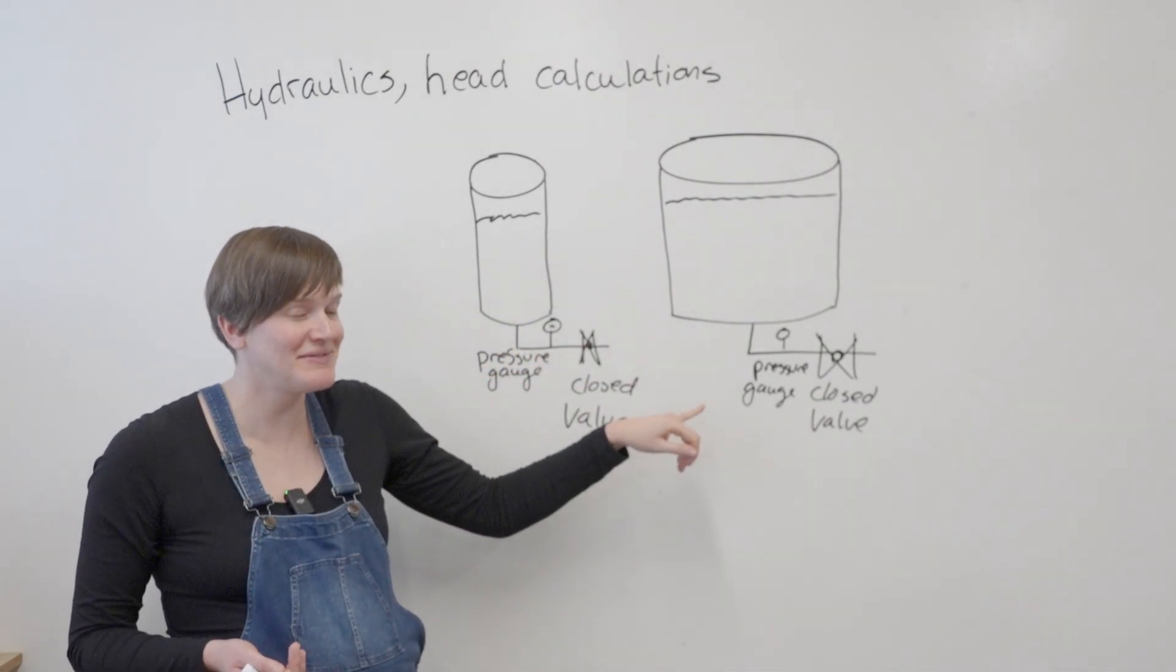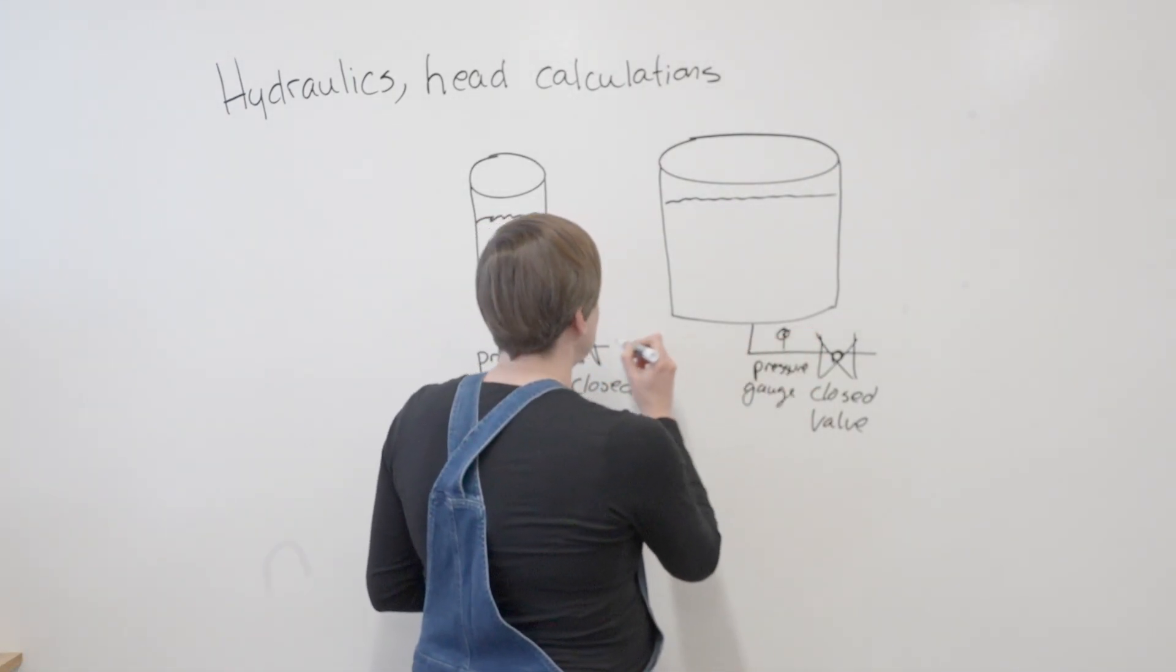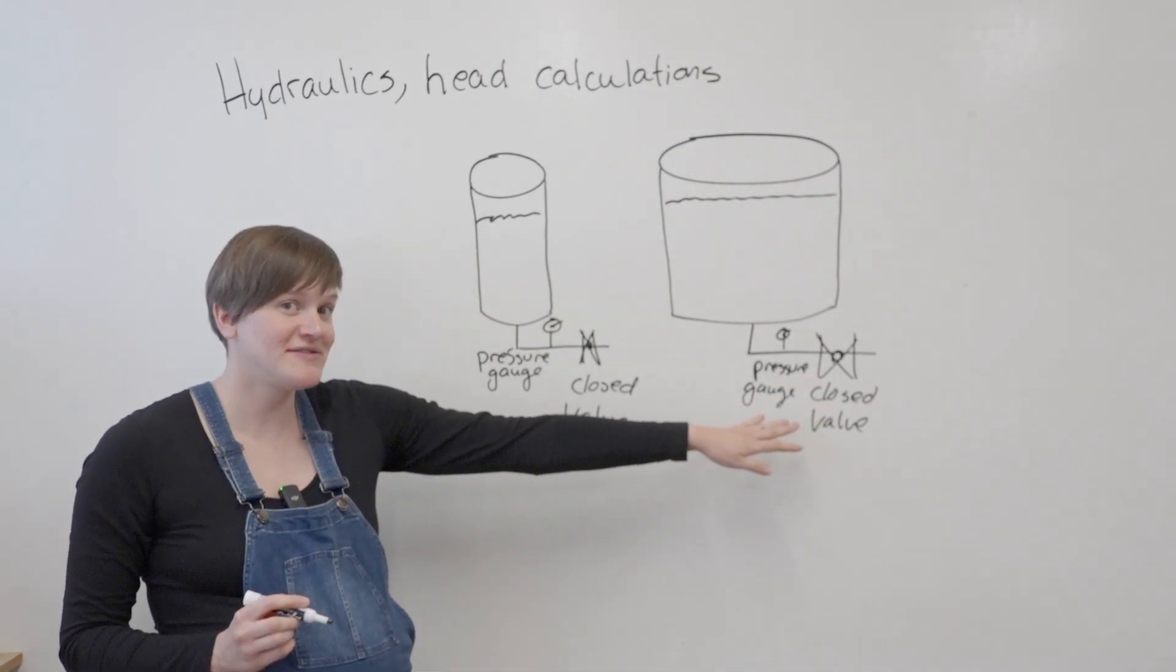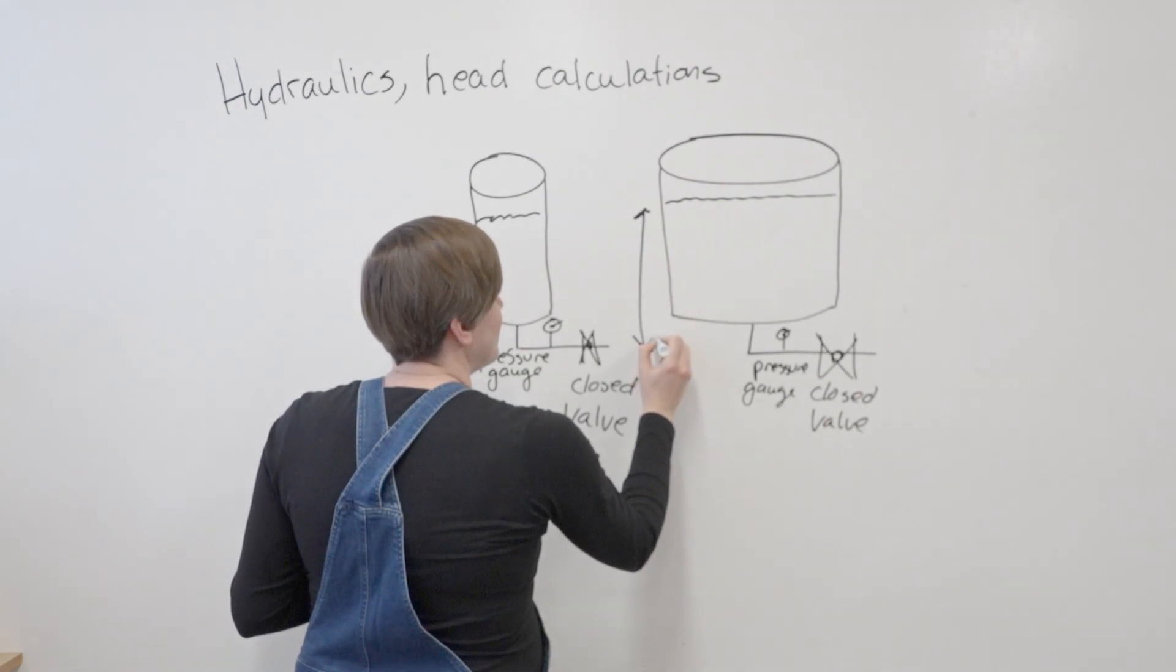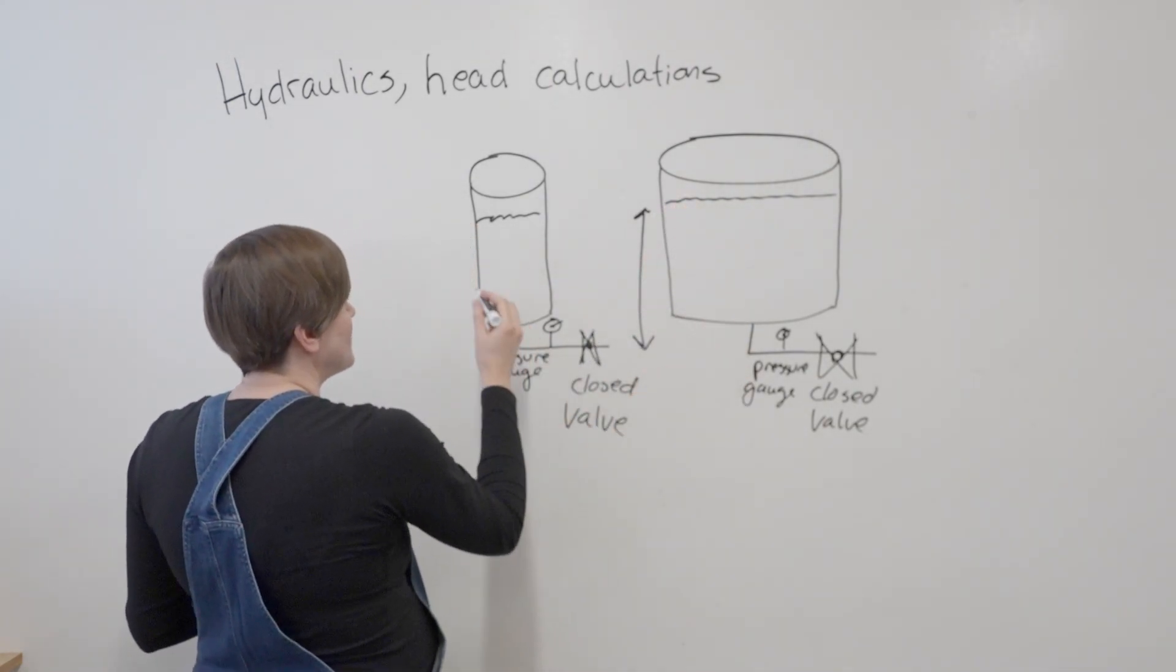That's a trick question. You'll actually have the same pressure reading on both gauges in a closed valve situation, because they both have the same height of water compared to the top of the water in the tank to where the pressure gauge is.